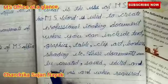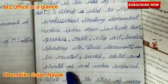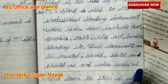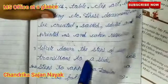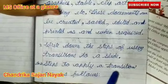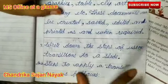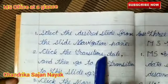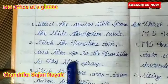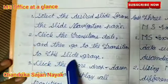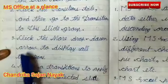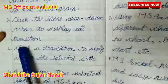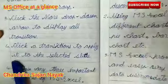These documents can be created, saved, edited and printed as and when required. Write down the steps for applying transitions to a slide. Steps to apply a transition are as follows: Select the desired slide from the slide navigation pane. Go to the Transitions to This Slide group. Click the More drop-down arrow to display all transitions. Click a transition to apply it to the selected slide.